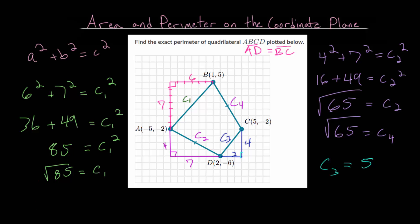So from here, we just want to add them together. So our perimeter of this quadrilateral, this four-sided shape A, B, C, D, is just the sum of these. So c1 plus c2 plus c3 plus c4.